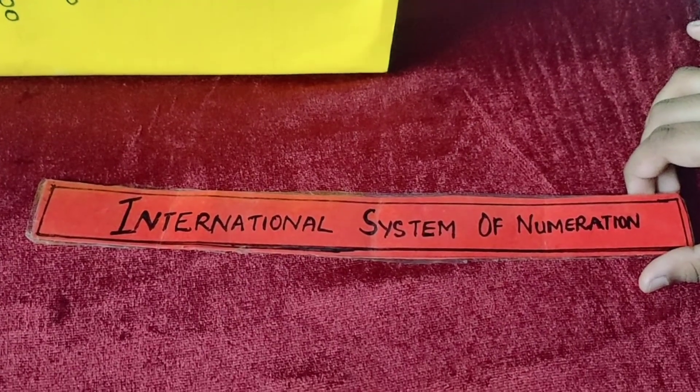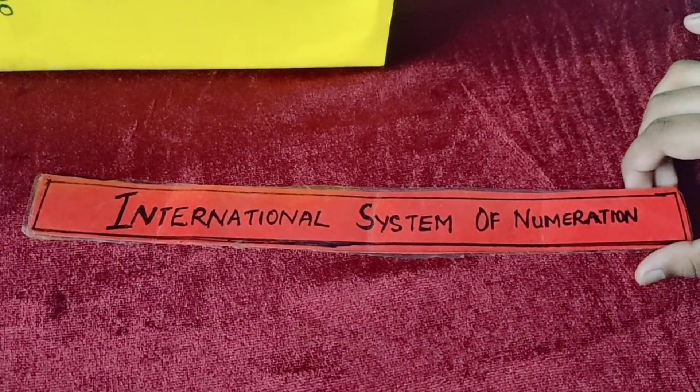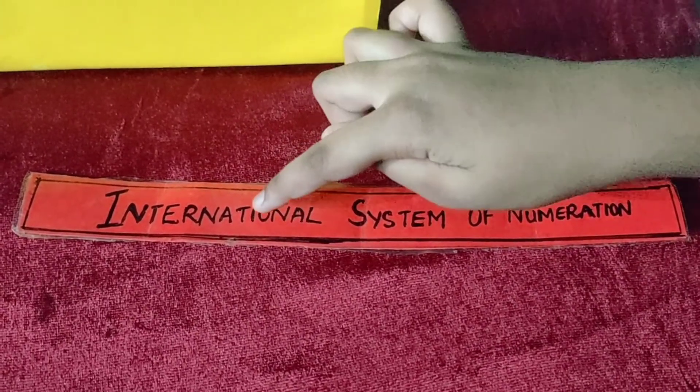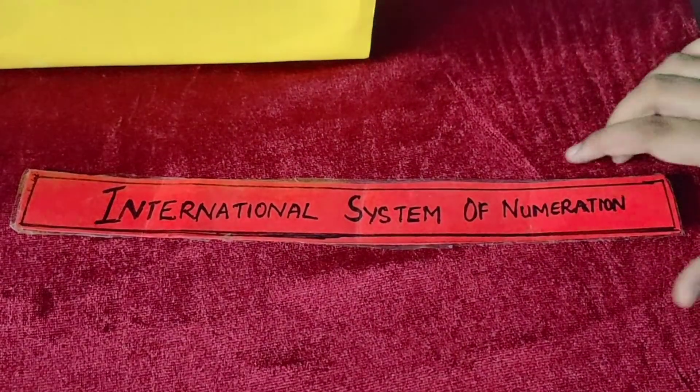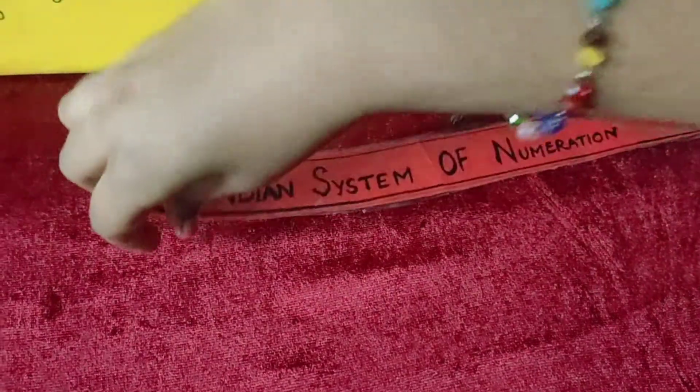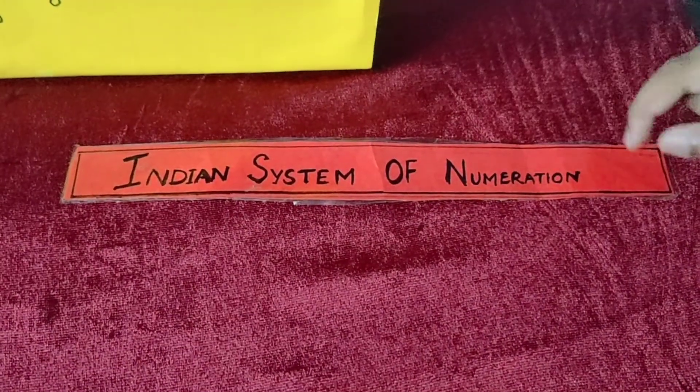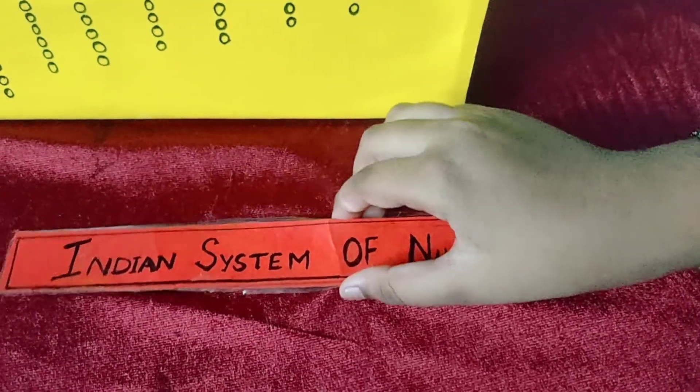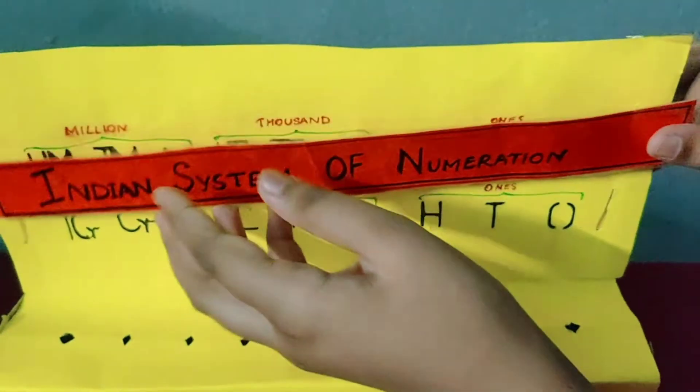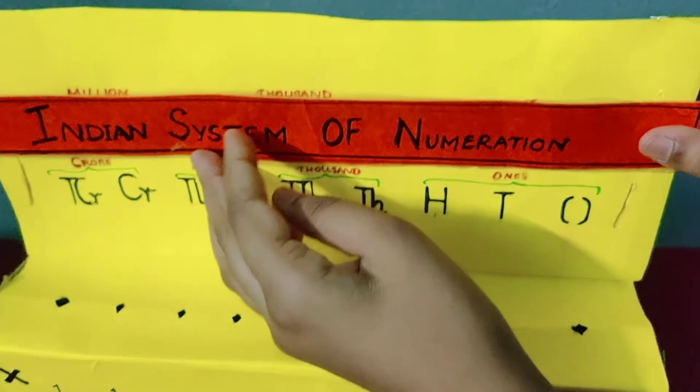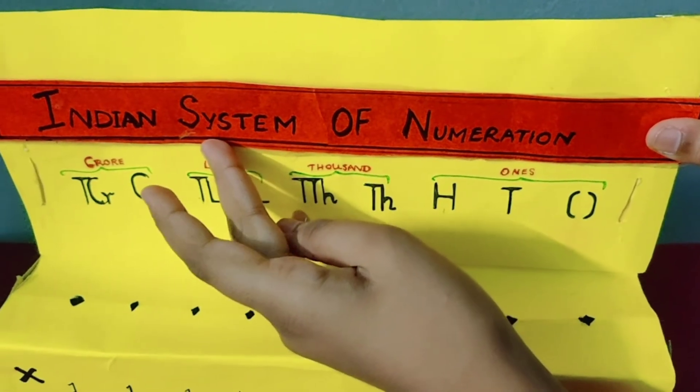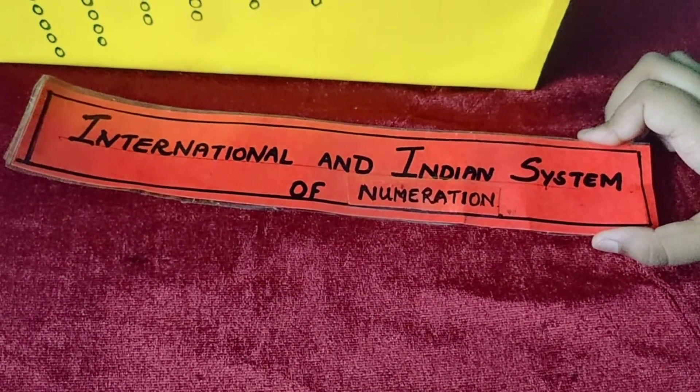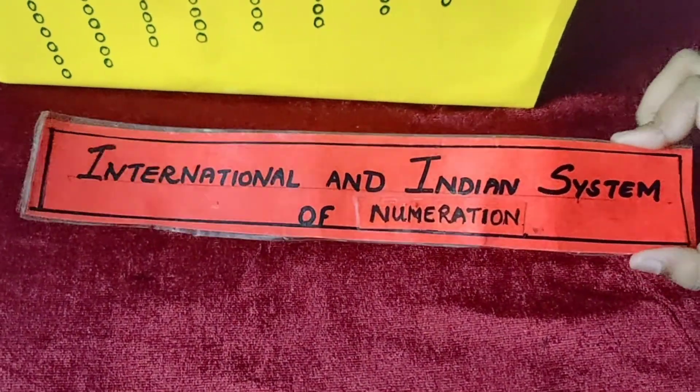We have to make a heading. For that we have to take a chart paper. Write international system of numeration and on the other side write Indian system of numeration. Make sure that the width of this chart paper should cover this. This is the main heading of this model. Let's fix it with glue.